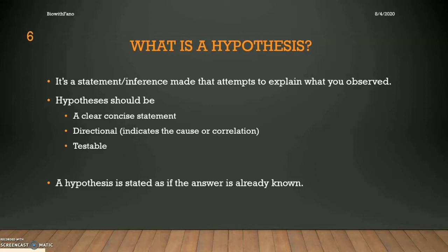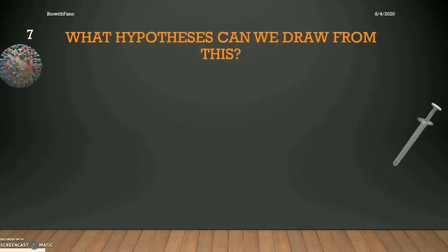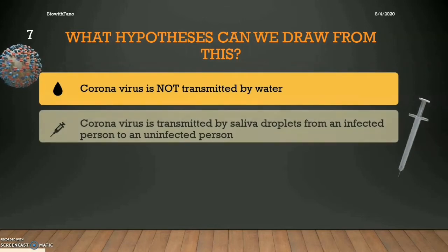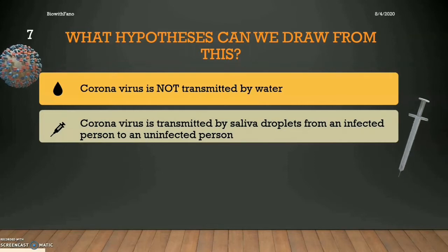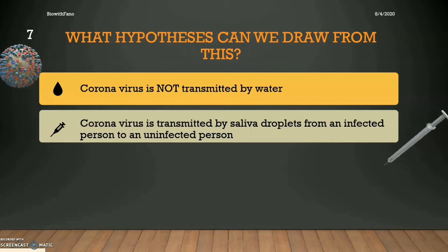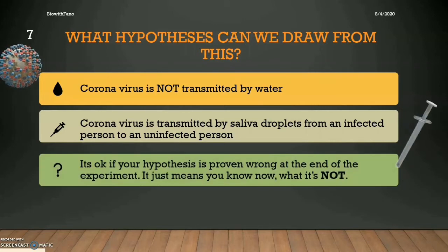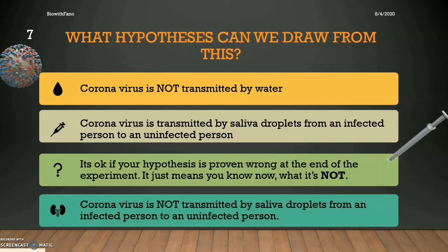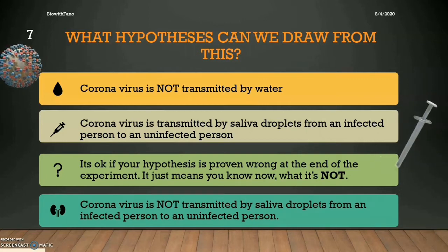The following are some potential hypotheses you may have come up with: coronavirus is not transmitted by water; coronavirus is transmitted by saliva droplets from an infected person. It's important to note that a hypothesis can be proven wrong and that's okay. In science we often know what something is by figuring out what it isn't — for example, coronavirus is not transmitted by saliva droplets from an infected person to an uninfected person.